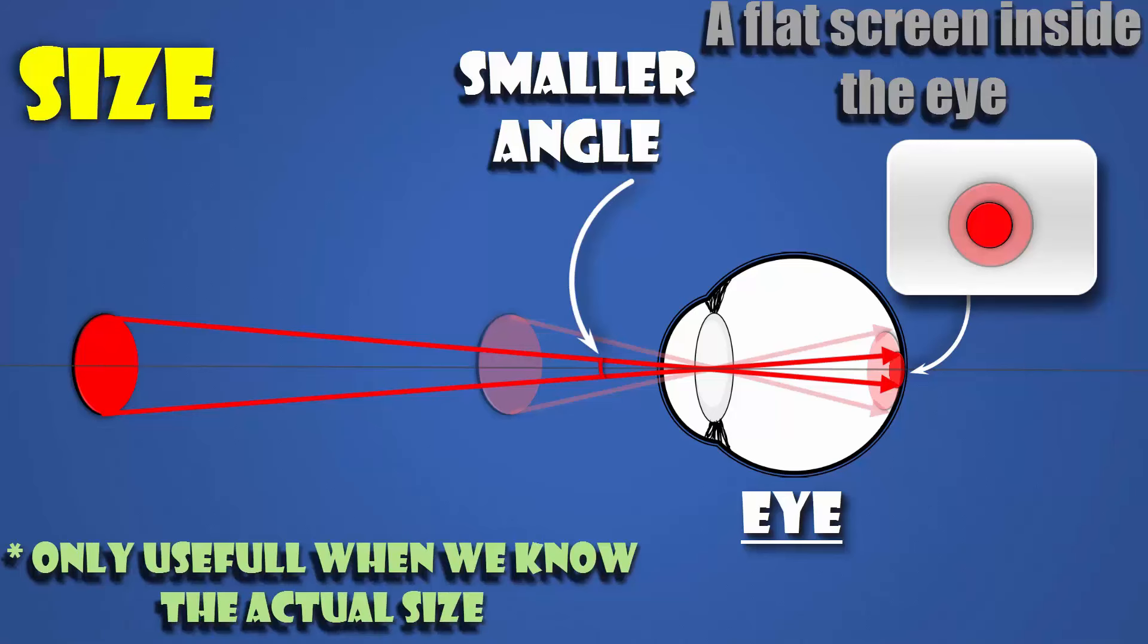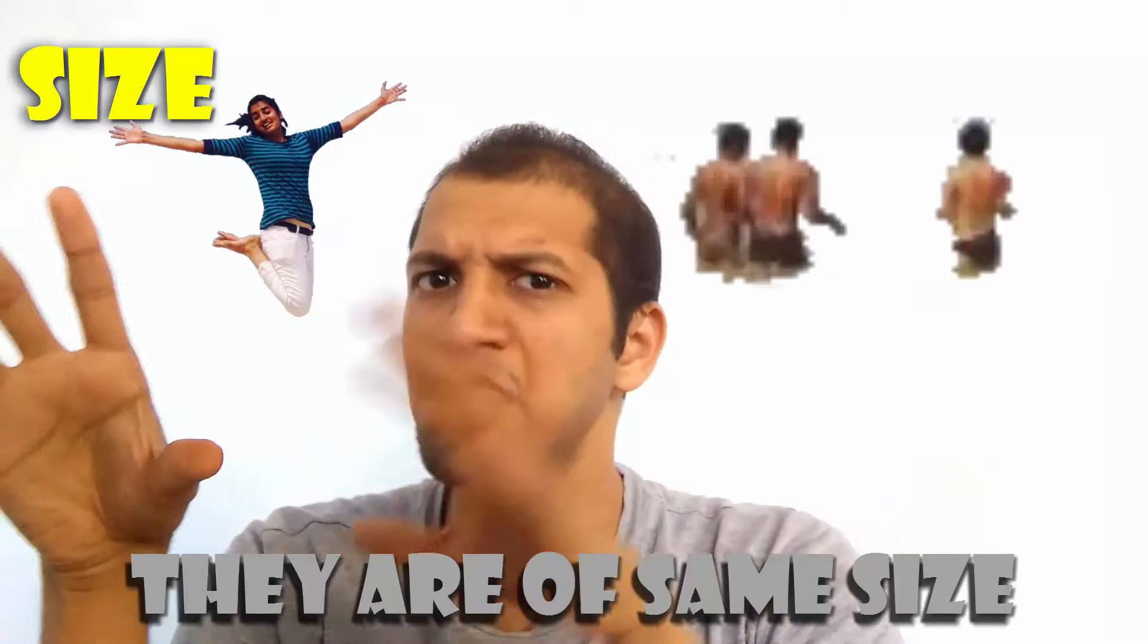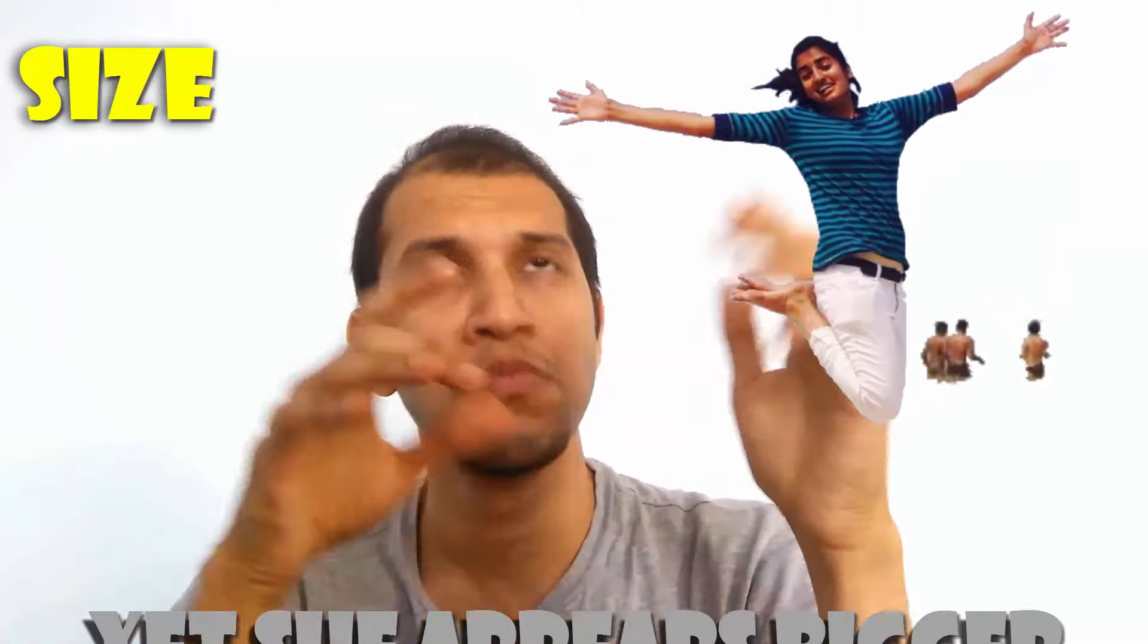But this only works when we know the actual sizes of the objects. We know that she is of more or less the same size as those dudes back there, yet she appears bigger. Hence, we conclude she must be closer.